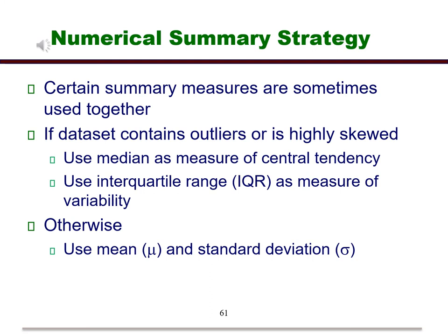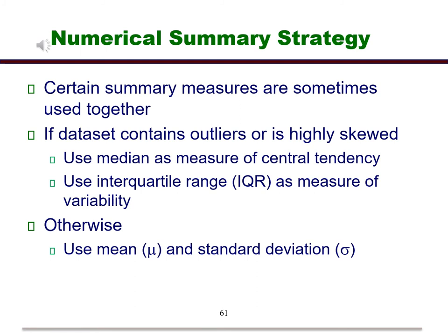Now we have talked about outliers throughout this presentation, but we haven't defined what they are or how to find them. Let's do that now. An outlier is a point that is too extreme from the rest of the data to be considered occurring by chance. We check for both outliers and extreme outliers. An outlier is more than 1.5 times the IQR from the nearest quartile. An extreme outlier is more than 3 times the IQR away from the nearest quartile.